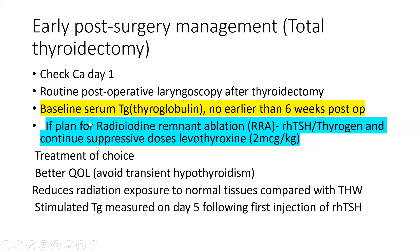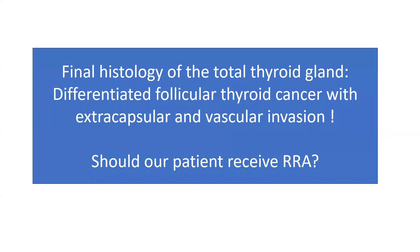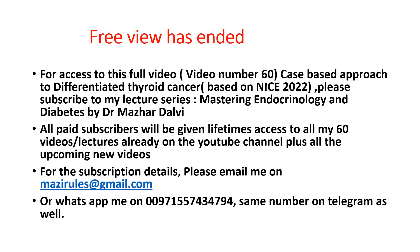Using recombinant TSH or Thyrogen prior to radioablation is what is recommended. The final histology of the total thyroid gland confirmed differentiated follicular thyroid cancer with extracapsular and vascular invasion. Should our patient receive radioiodine remnant ablation? That is what we are going to discuss in the full session.